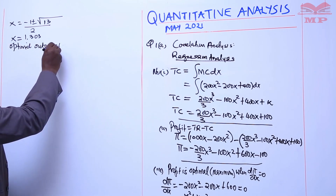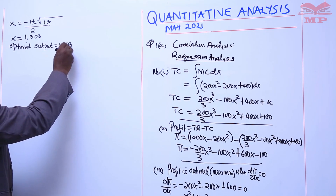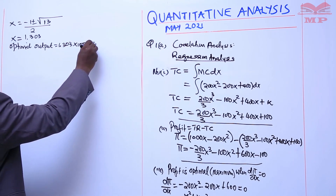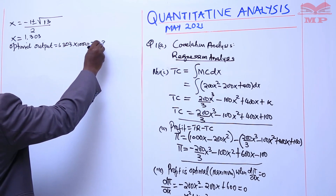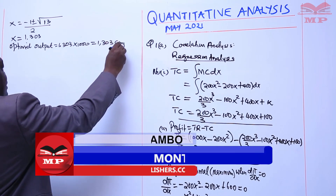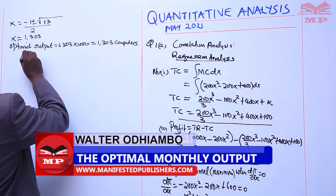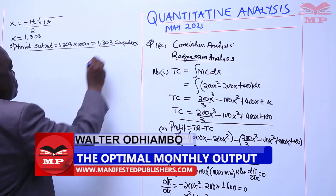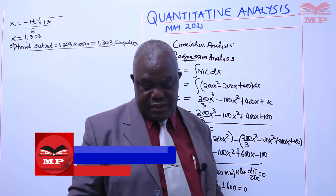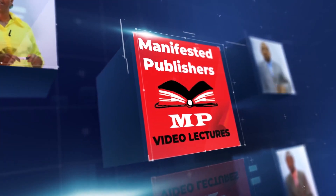The optimal output is 1303 computers, and that is what is required per month for that part.